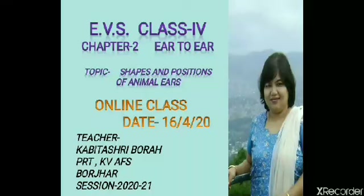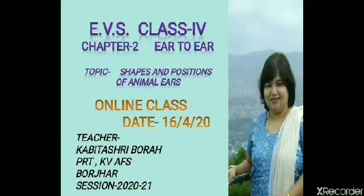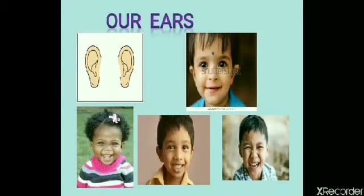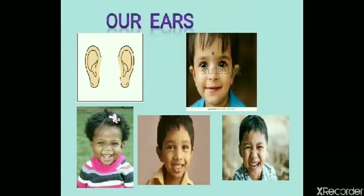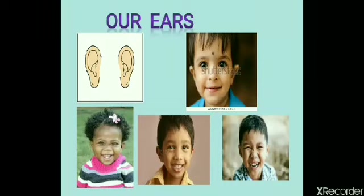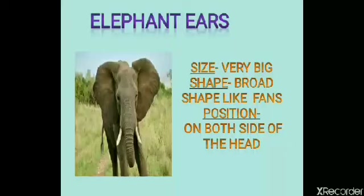You also learnt that in some animals we can see the ears, whereas in some animals we cannot see the ears. Today you will learn about the different shapes and positions of animal ears. Look at this picture of the cute children — can you see their ears? Our ears are located on both sides of the head.